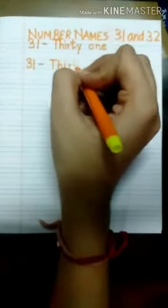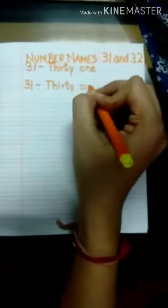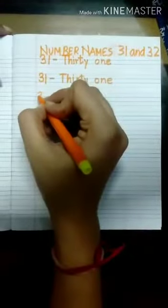Now, t, h, i, r, t, y, o, n, e: thirty-one, 31.